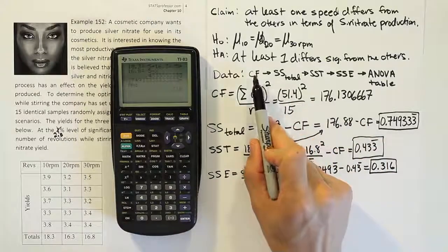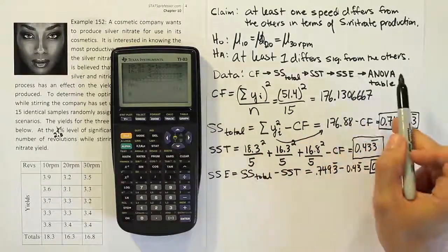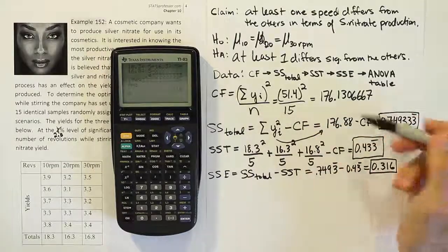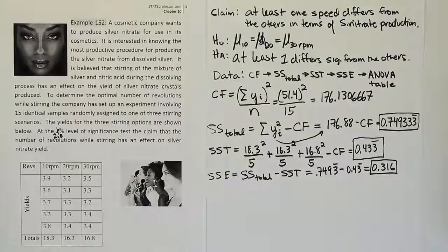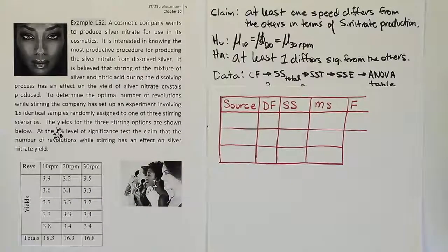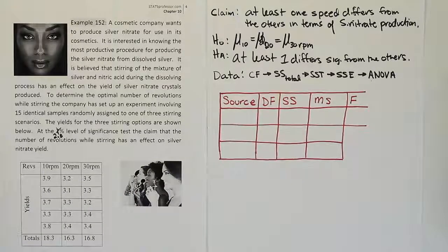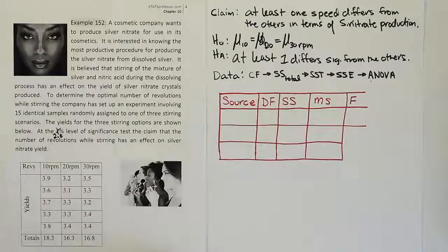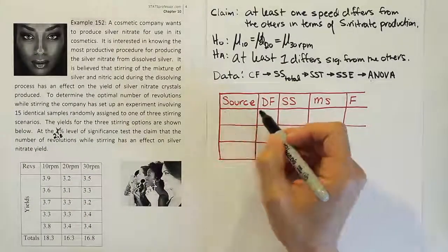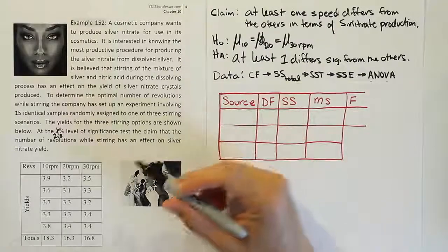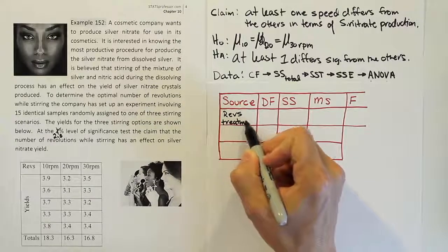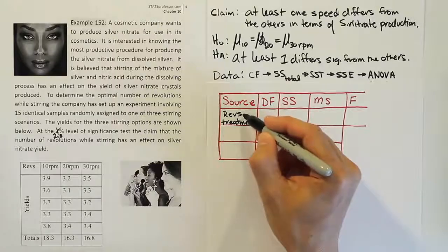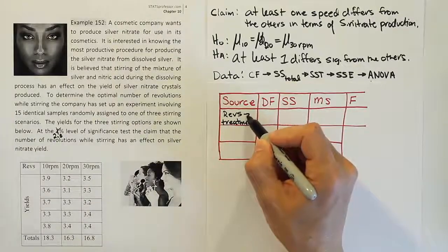Now, once we've done the correction factor, sum of squares total, sum of squares treatment, and sum of squares error, we go to our ANOVA table next. The ANOVA table should have a column for source, a column for degrees of freedom, sum of squares, mean squares, and the F test statistic. The source is going to be the treatment — in this case the revolutions, so we can write 'revs' or 'treatments'; either one is the same. Then we'll have error in the next row, and then the total.